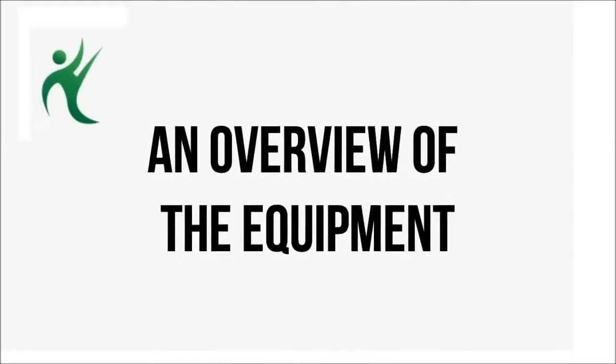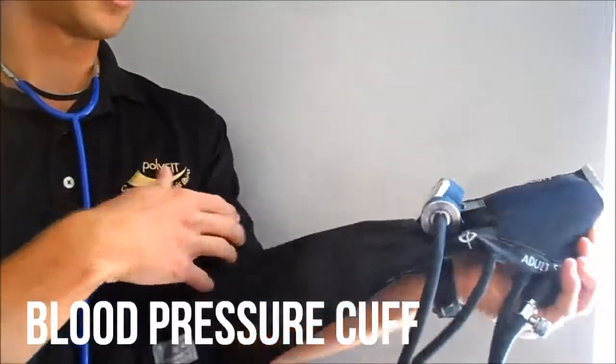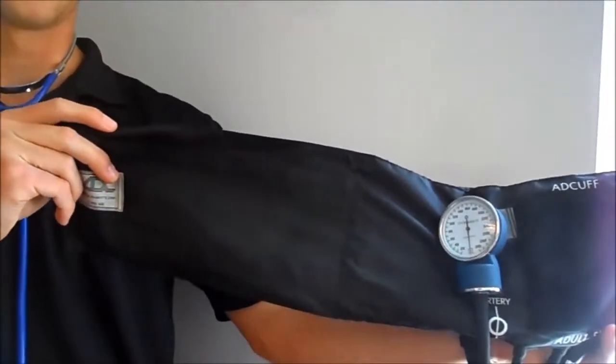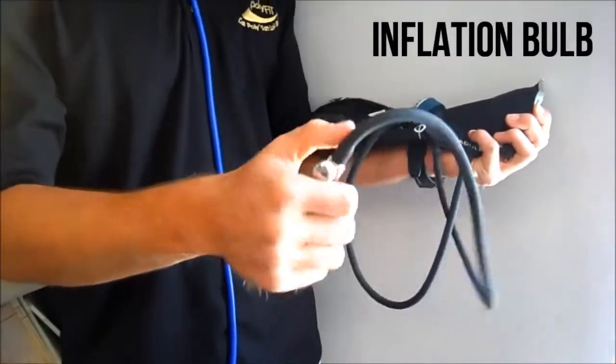All right, so after we take the heart rate, we move on to blood pressure. There's some equipment that you need to have prepared for this. This is the blood pressure cuff, and this whole black velcro thing is what you wrap around the patient's arm. You have the pump right here which allows you to pump up to put air in here, and that's what gets it tight around their arm.